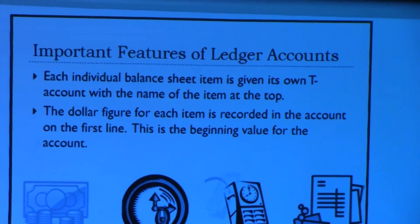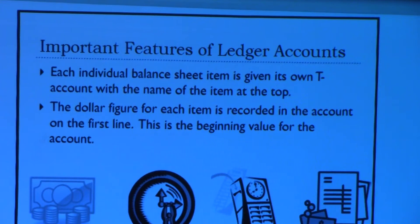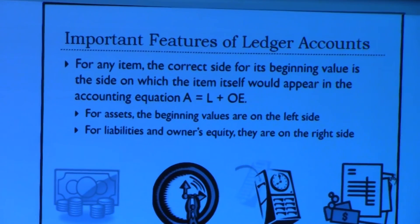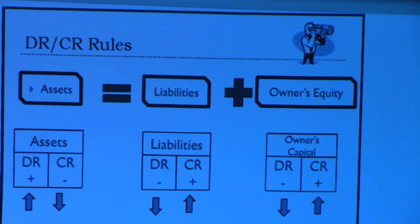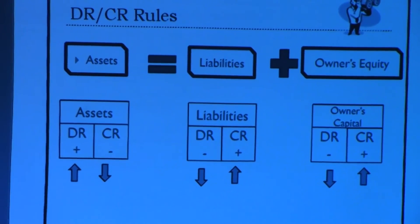That is where we start our T-accounts. We call them T-accounts because they physically look like a T — the left side is the debit and the right side is the credit. An important feature of ledger accounts is that at all times assets must equal liabilities and equities. To achieve that, you must have two entries: one debit and one credit equaling each other. The rules of debits and credits follow the accounting equation: debits increase assets and credits decrease assets, while liabilities and equities increase through credits and decrease through debits.